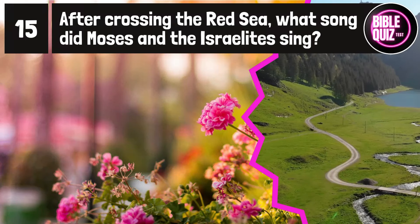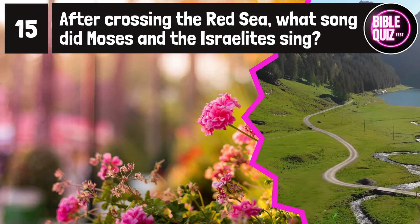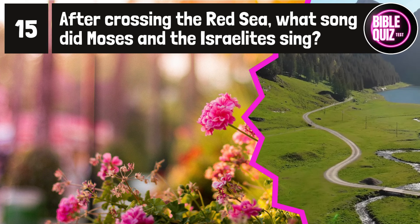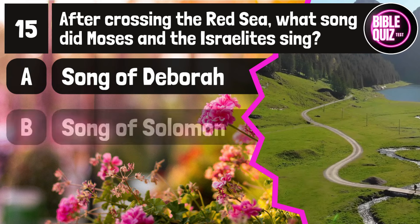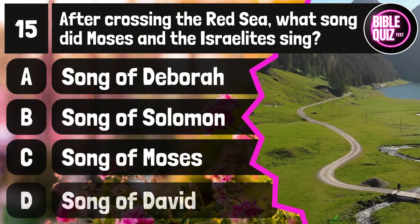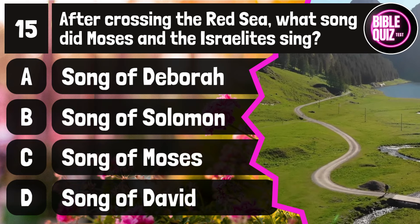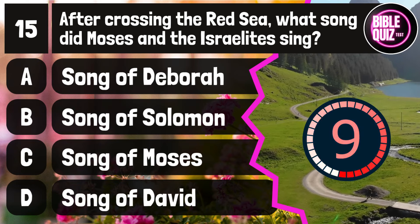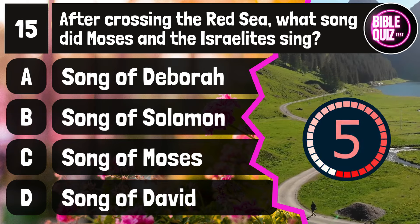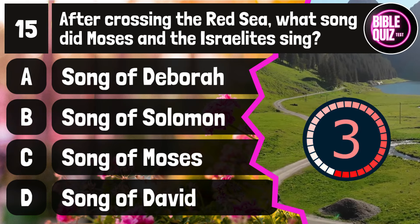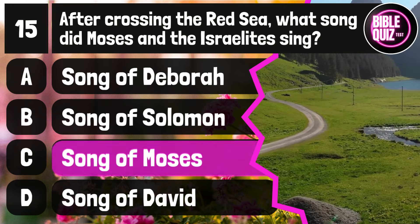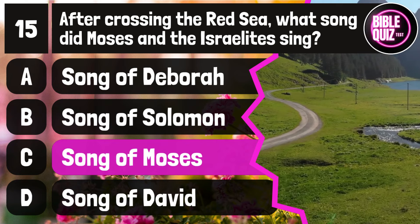Question number 15. After crossing the Red Sea, what song did Moses and the Israelites sing? Option A: Song of Deborah. Option B: Song of Solomon. Option C: Song of Moses. Option D: Song of David. Time to think. The answer is option C: Song of Moses.